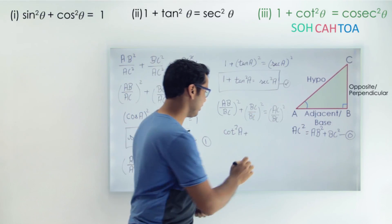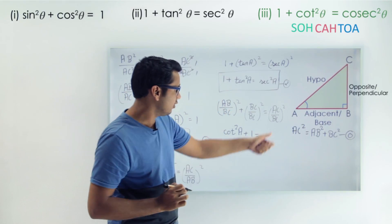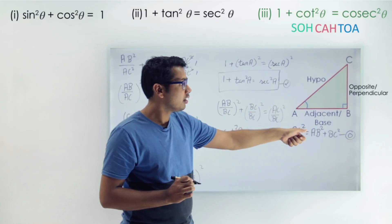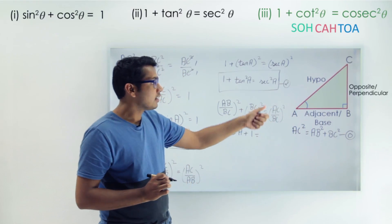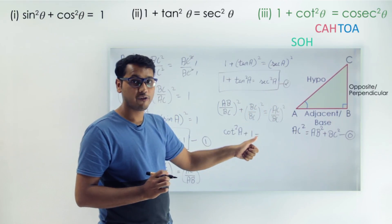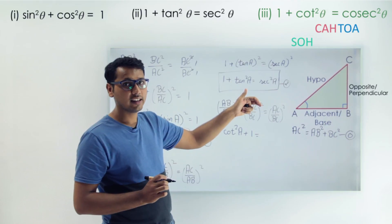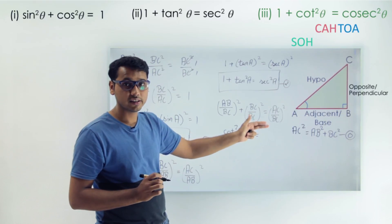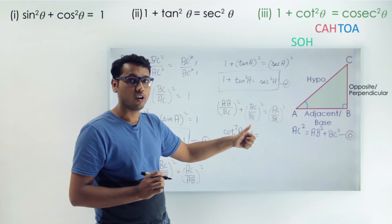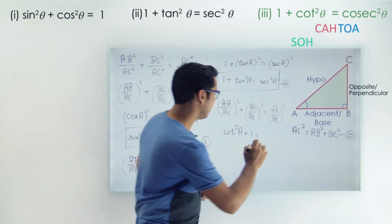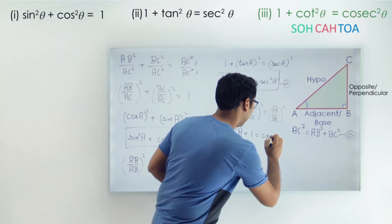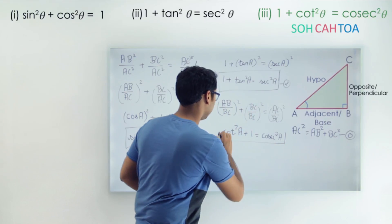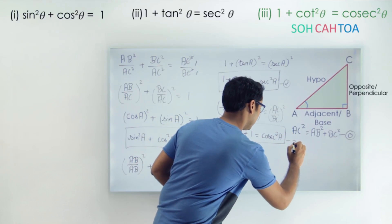So we have cot square A plus 1. Now look at the term AC upon BC — AC is the hypotenuse and BC is opposite — so it is hypotenuse upon opposite. Since sin is opposite upon hypotenuse, the reciprocal is cosec. So AC upon BC equals cosec A, and squaring gives cosec square A. Therefore our third identity is: cot square A plus 1 equals to cosec square A.